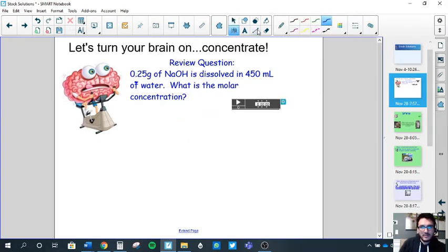Make sure I have my pen going here. So here it gives us a certain mass of sodium hydroxide and it says that this amount is dissolved in 450 mL of water. What is the molar concentration? So we know that molar concentration is C equals N over V, where N is the number of moles and V is volume in liters. So something I can do right away is convert milliliters to liters, divide that by a thousand and we get 0.450 liters. Now we don't have moles, we have mass.